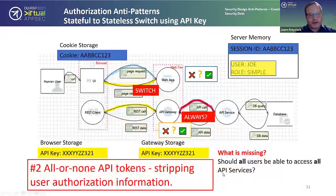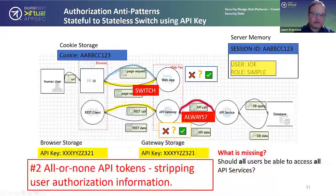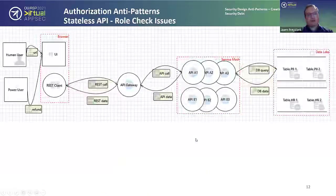The first technical anti-pattern is using an all-or-none API token. By doing this, we strip out the user authorization information. We should not give an all-or-nothing token and assume all services are created equal later on, even if it works when the application is young. We should plan ahead and use something like a JSON Web Token that carries more authentication and authorization information.